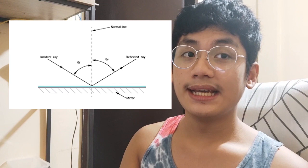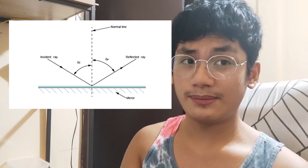Which means, if the angle of the light ray is 45 degrees, the angle of reflection is also 45 degrees. The law of reflection also states that the incident ray, reflected ray, and the normal to the interface of any two given mediums all lie in the same plane.